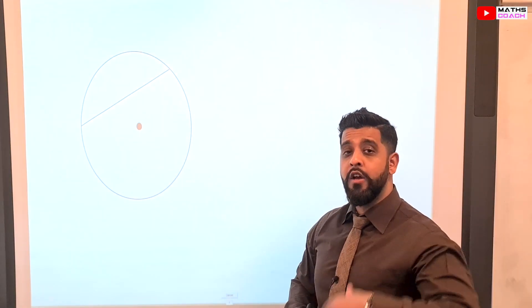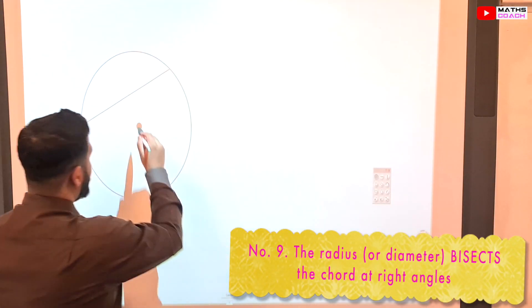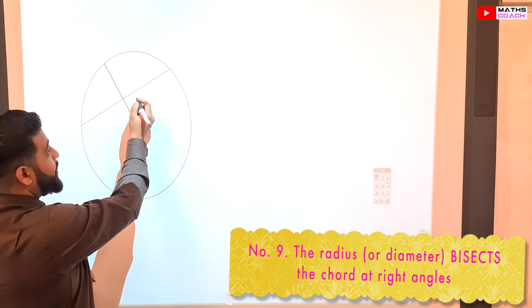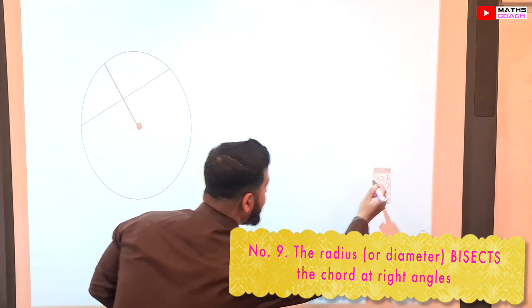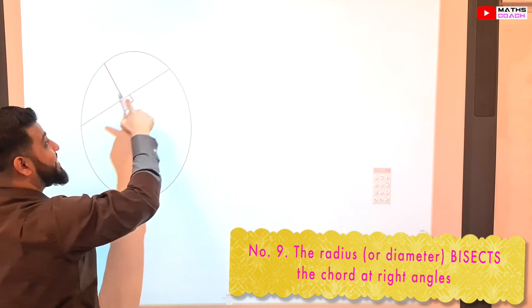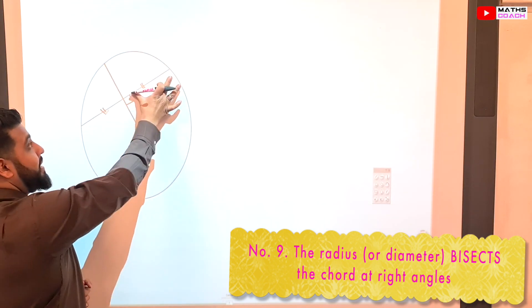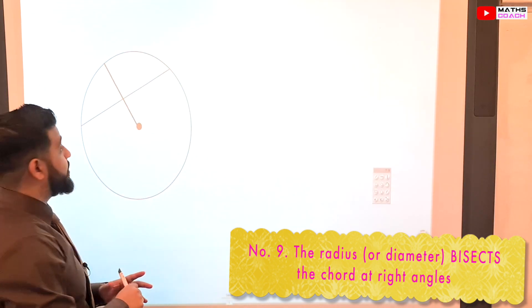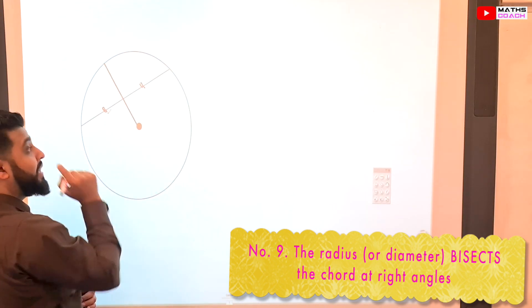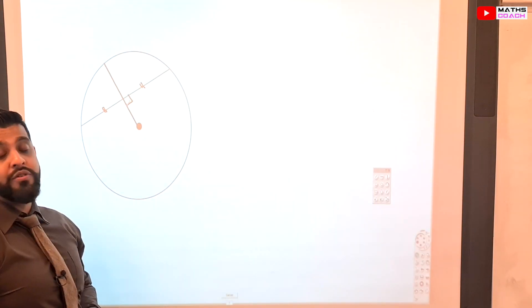For higher level students: if a radius meets a chord on a circle and the angle between them is 90 degrees, then the radius bisects the chord, meaning the two parts of the chord are exactly the same length. Conversely, if you're given that the radius splits the chord into two equal parts, that is proof that the angle between the radius and chord is 90 degrees.